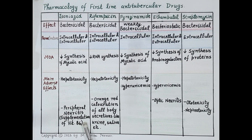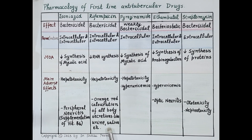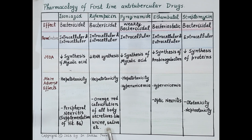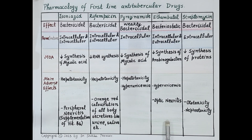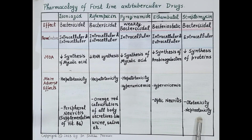Supplementation of vitamin B6 is essential along with isoniazid, as it prevents the neurotoxicity of isoniazid. Rifampicin can also cause orange-red coloration of all body secretions such as urine, saliva, and tears — this is harmless but patients should be informed to avoid fear and anxiety. Ethambutol can cause optic neuritis, leading to loss of visual sharpness and color vision problems. Streptomycin can cause ototoxicity (toxicity to ears) and nephrotoxicity (toxicity to kidneys).